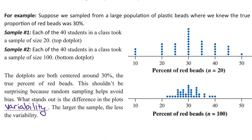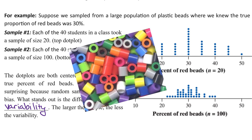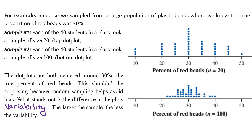Let's consider a quick example. Suppose we sampled from a large population of plastic beads — the little ones you may have made bracelets with as a kid. If you think about this large population of beads, we know that the true proportion of red beads is 30%. So you've got this big bag of beads: 30% is red and 70% is something else. For sample one, suppose all 40 of us in the class each take a sample of size 20. We randomly select 20 beads, look at what proportion are red, put them back, mix the bag, and the next student does the same.